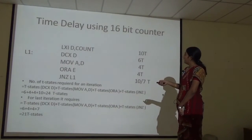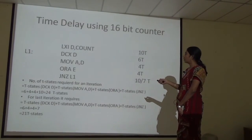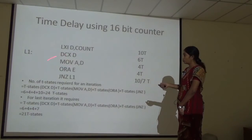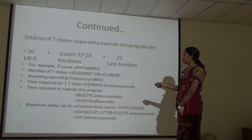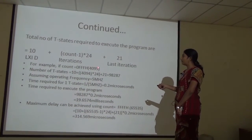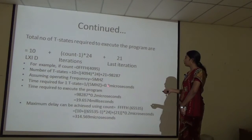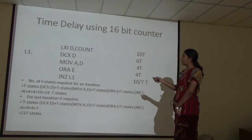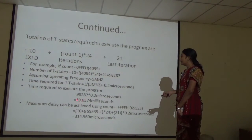The total time delay = LXI D (10 T states) + (count − 1) × 24 + 21 (last iteration). For example, with count = 0FFF hexadecimal (which equals 4095 in decimal), the total comes to 98,287 T states. At 5 MHz (0.2 microseconds per T state), the time required is 98,287 × 0.2 = 19.6574 milliseconds to execute these five instructions including the loop.